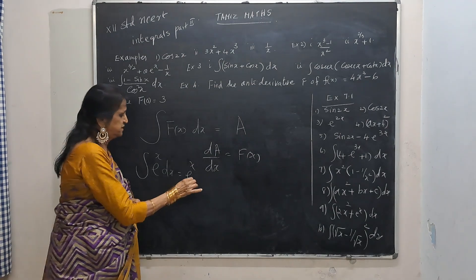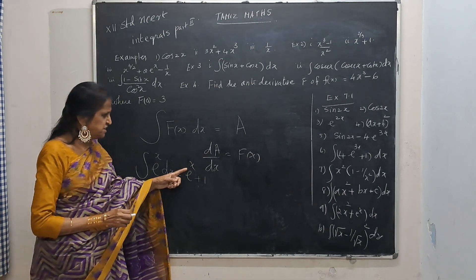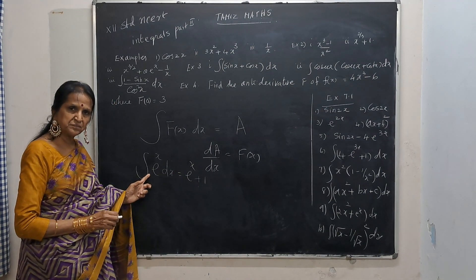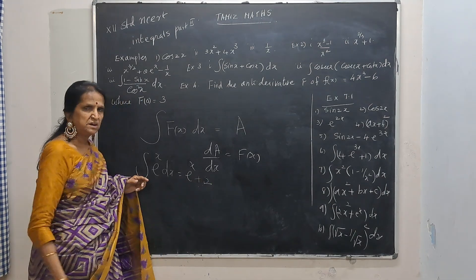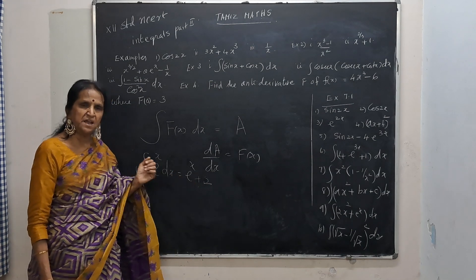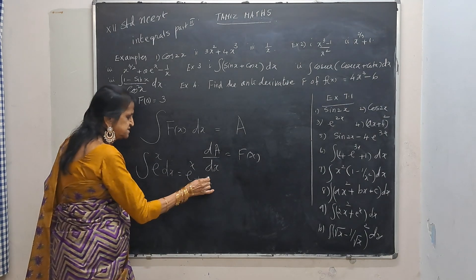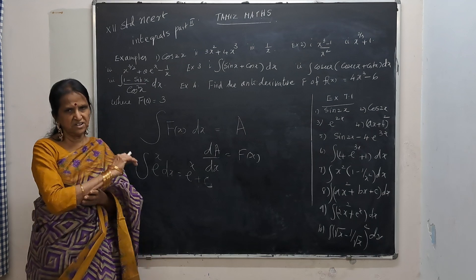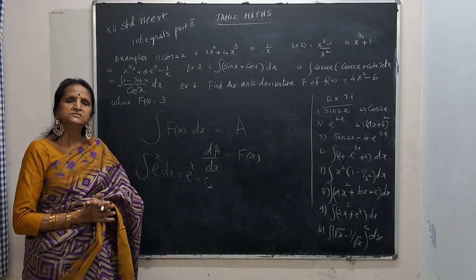But what happens if I put the answer as e to the power x plus 1? If I differentiate e to the power x plus 1, the derivative of 1 will be 0 — that is also e to the power x. What if I differentiate e to the power x plus 2? That also will be e to the power x. What if I differentiate e to the power x plus n, where n is a constant? That also will be e to the power x. So we put a c, where c is called the constant of integration.